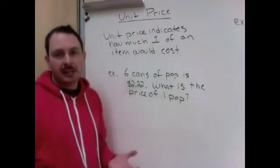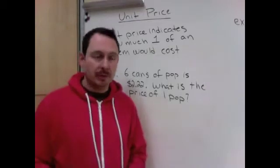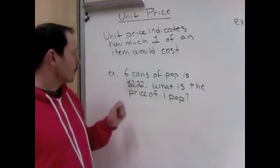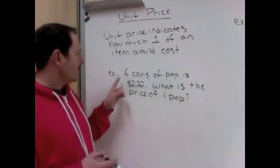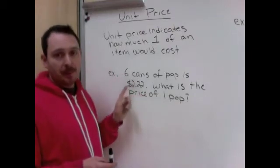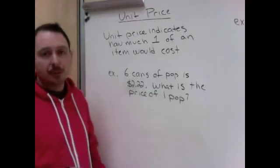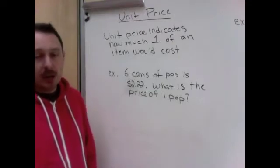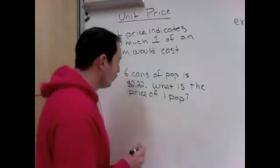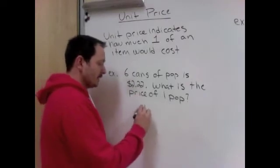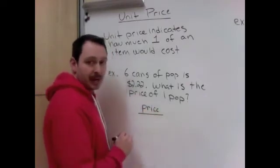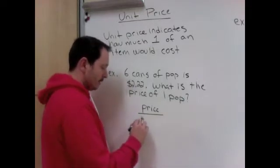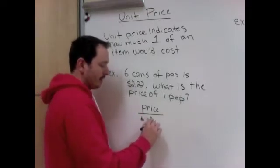So people often buy things in bulk. We buy 6 of something or 12 of something, or we buy the big jar of ketchup instead of the little one. So here's an example. If 6 cans of pop is $2.22, what is the price of one pop? So when we're comparing price, we're always going to take the price, divide by the number of items.